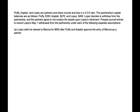The partners' capital balances are as follows: Fluffy $300, Angela $270, Lopez $400. Lopez decides to withdraw from the partnership, and the partners agree to re-evaluate the assets upon Lopez's retirement. We need to prepare the journal entry to record Lopez's May 1st withdrawal under each of three separate situations. First situation: Lopez sells his interest to Monica for $500, after Fluffy and Angela approve the entry of Monica into the partnership.